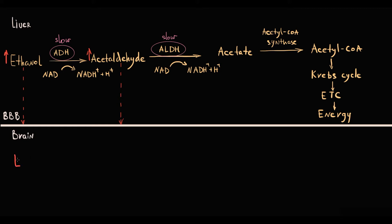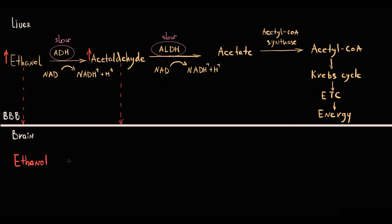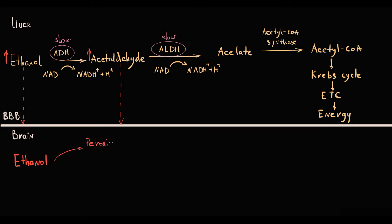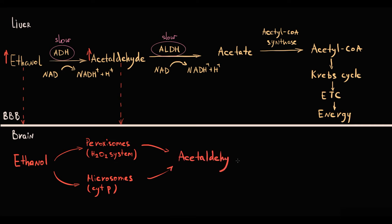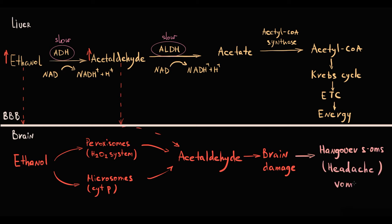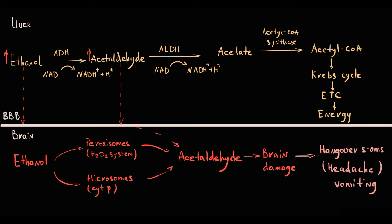In the brain, alcohol dehydrogenase is inactive, but ethanol can still be metabolized by two other pathways: in peroxisomes, ethanol can be oxidized by a catalase system, and in microsomes, ethanol is oxidized by cytochrome P450 enzymes. Both pathways result in production of acetaldehyde. Both ethanol and, to a greater extent, acetaldehyde cause severe damage to brain tissue — for example, hangover symptoms such as headache and vomiting are caused exactly by acetaldehyde. However, brain tissue is not even the major site of injury, since most of the damage is done by the liver.